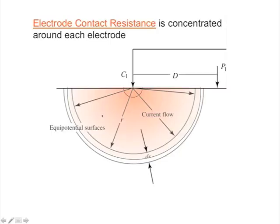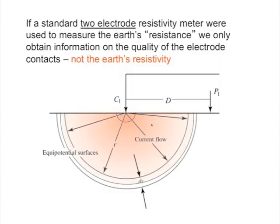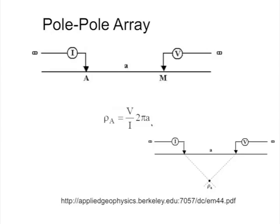If we have constant apparent resistivity, we're going to have nice equipotential surfaces spaced at a constant distance dr. If you want to look at one volt of difference, it's going to be one constant distance apart between those one-volt equipotential surfaces. If you just used a standard resistivity meter with only two electrodes, what you're really going to get is just that contact resistance between the probes and the ground — it won't be the Earth's resistivity at all, because typically that contact resistance is rather high.